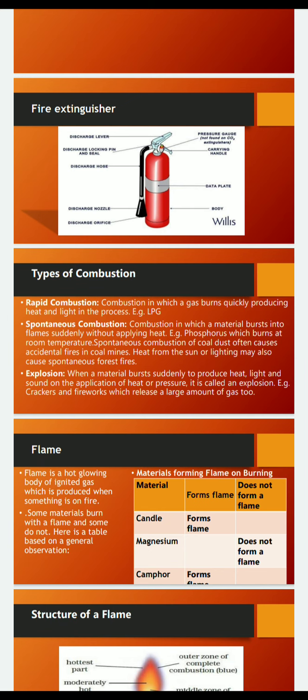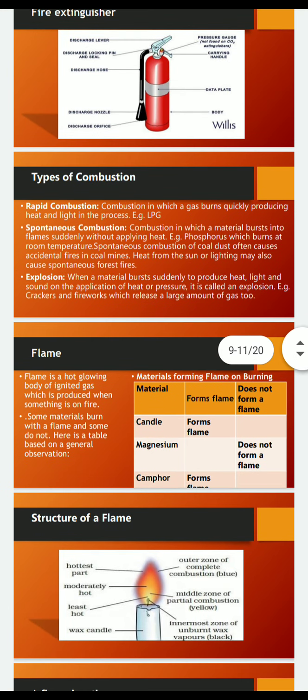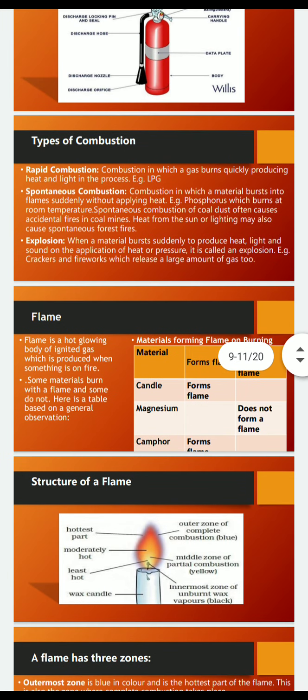Materials like camphor form a flame on burning, while magnesium does not form a flame. The structure of a flame is mainly divided into three zones: the innermost zone, known as the dark or black zone; the middle zone, known as the luminous zone; and the outermost zone.